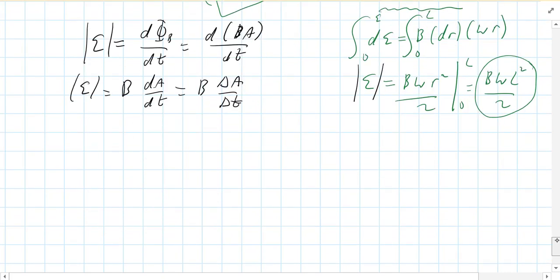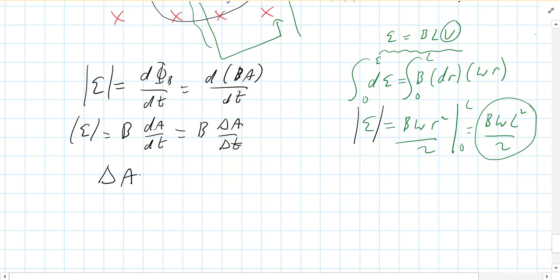So the dA, or the delta A, is pi r squared, which in this case is pi L squared. What's the time?